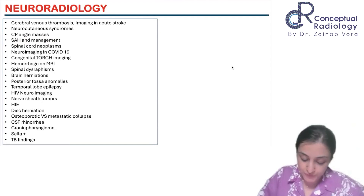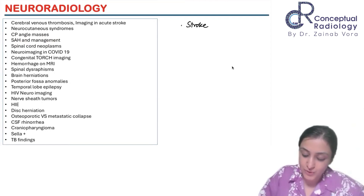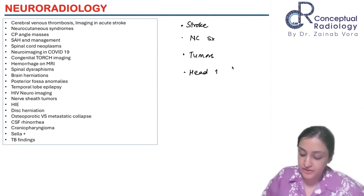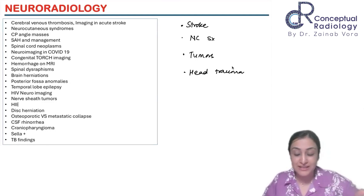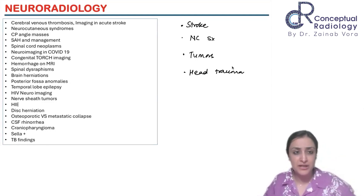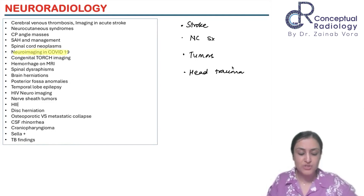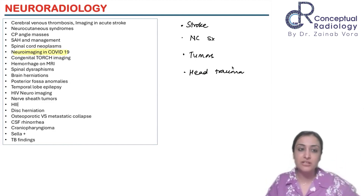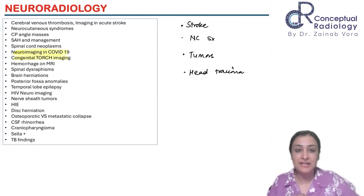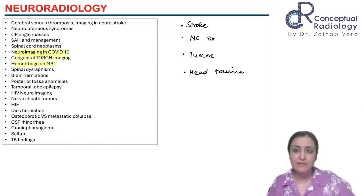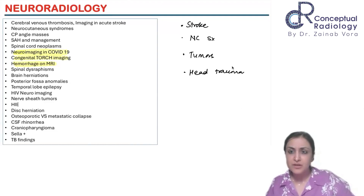The core chapters you need to master in neuroradiology are: stroke (including arterial and venous), neurocutaneous syndromes, tumors, and head trauma. For niche theory topics, things like neuroimaging in COVID-19 can be covered in one class along with four or five other small topics. Spinal cord neoplasms and TOT imaging can be covered. I'm highlighting these for myself as topics to take as classes — hemorrhage on MRI changes is one of them.